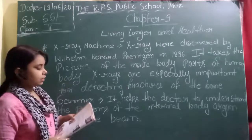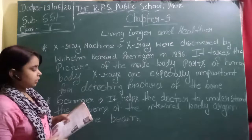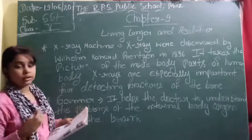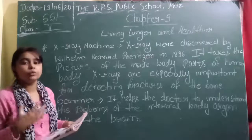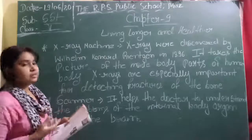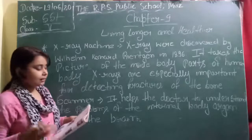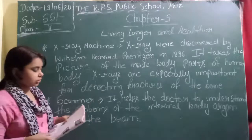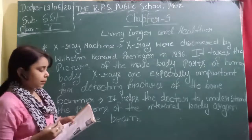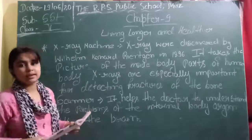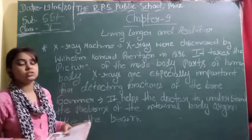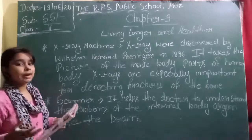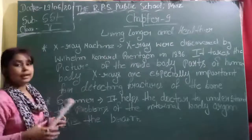ECG — Electrocardiogram — and EEG — Electroencephalogram — are used to monitor the heart and brain. Whatever problem there is with the heart, the scanner can be used. Laser stands for Light Amplification by Stimulated Emission of Radiation. It is used to perform operations without cutting the body. So these are the facts about the X-ray machine and scanner.